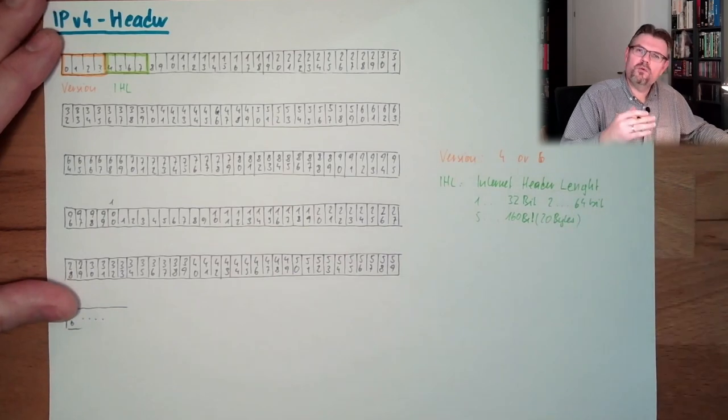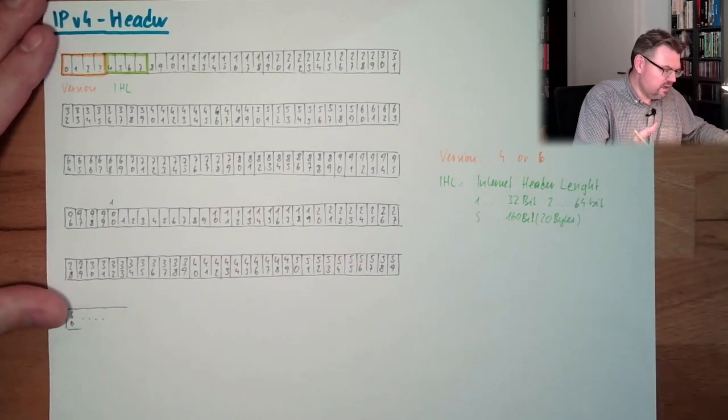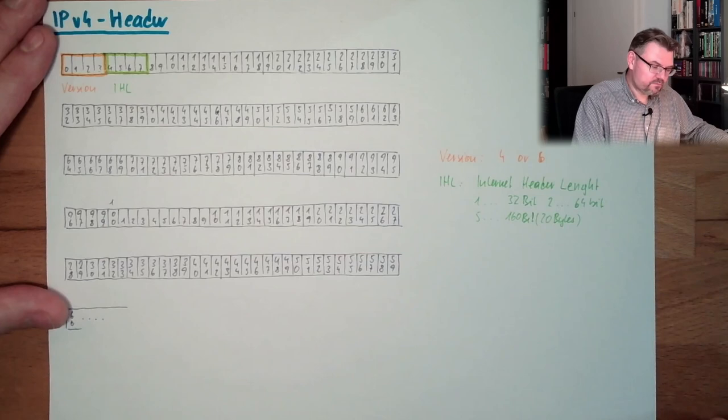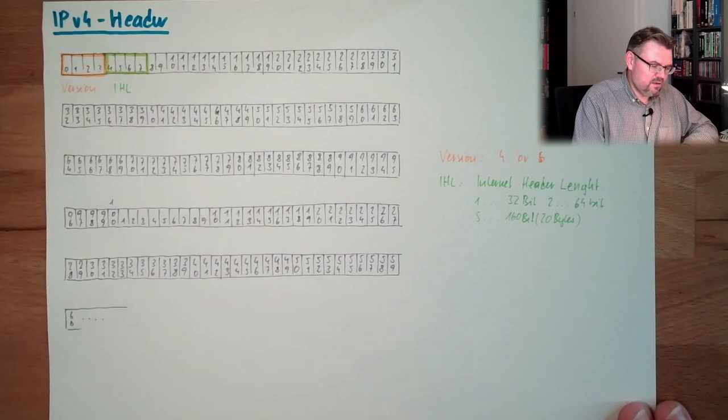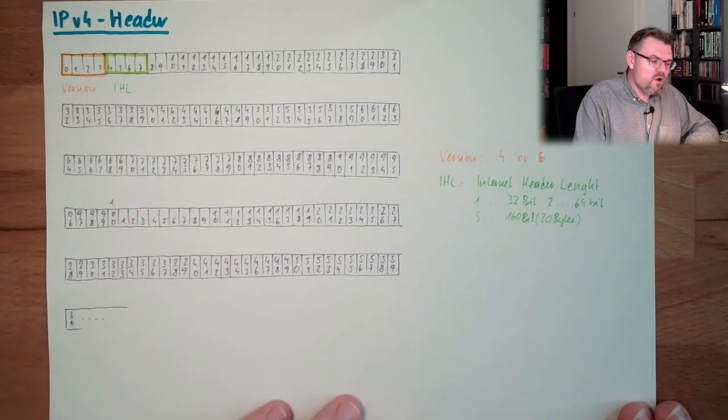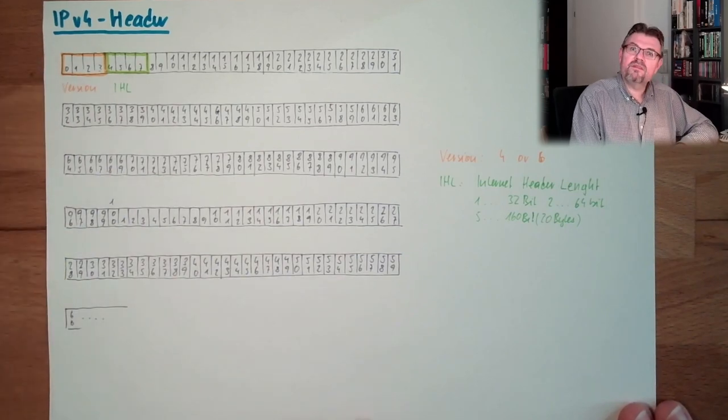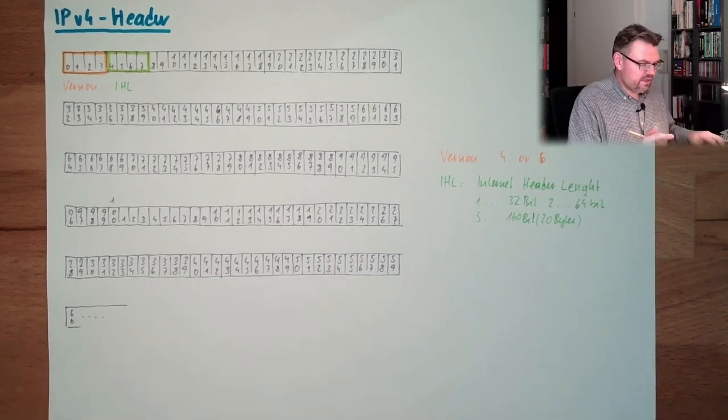It's always times whatever value is inside there, times 32 or 8 in bytes. This means the maximum header length is 15, because the maximum value is 15 here with 4 bits. 15 times 32 bit, this would be the maximum header length an IPv4 packet is supporting.